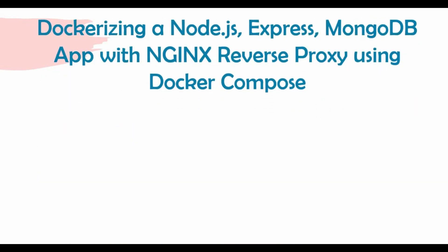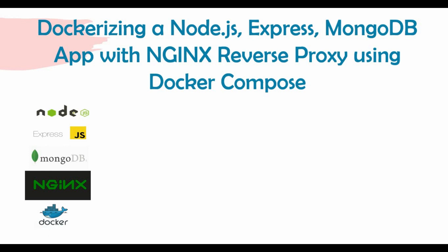To dockerize this Node.js Express MongoDB app with NGINX reverse proxy, we are going to use Docker Compose. We can create containers one by one manually, but Docker Compose is the easiest and better way to do it. We will write a Docker Compose file with three services — one for Node.js, one for MongoDB, and one for NGINX — which will create all these containers.